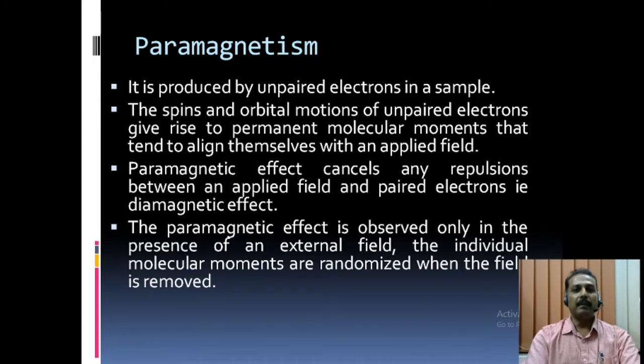On the other hand, paramagnetism is produced by unpaired electrons in a sample. The spins and orbital motions of unpaired electrons give rise to permanent molecular moments that tend to align themselves with an applied field. Paramagnetic effect cancels any repulsions between an applied field and paired electrons, i.e., diamagnetic effect. The paramagnetic effect is observed only in the presence of an external field. The individual molecular moments are randomized when the field is removed.